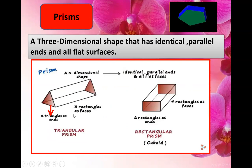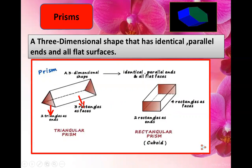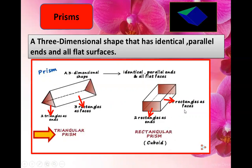This is an example of a triangular prism where two triangles are at the ends and one, two and three rectangles as faces. In a rectangular prism, that is a cuboid, you can find two rectangles as ends and four rectangles as faces.